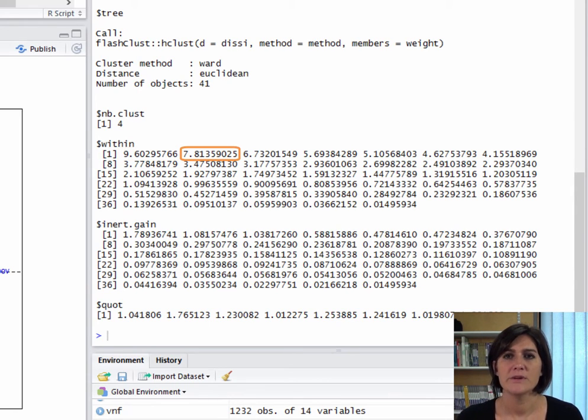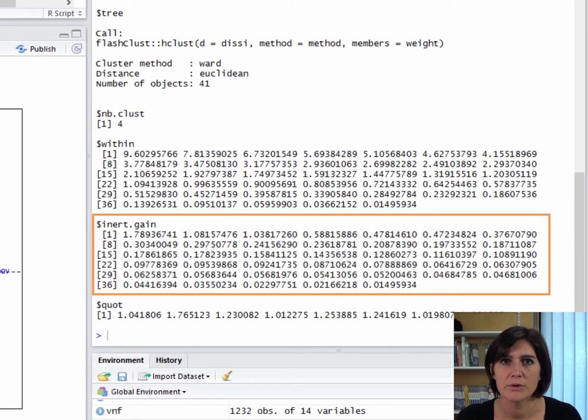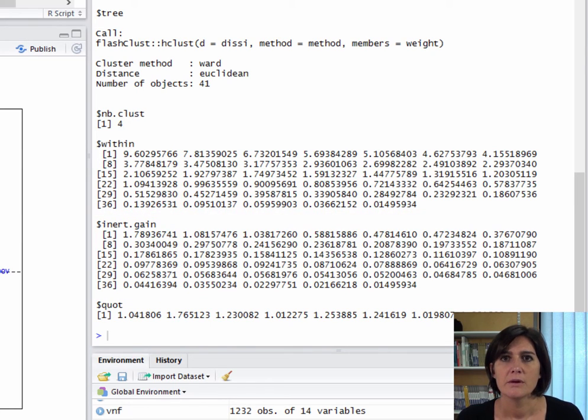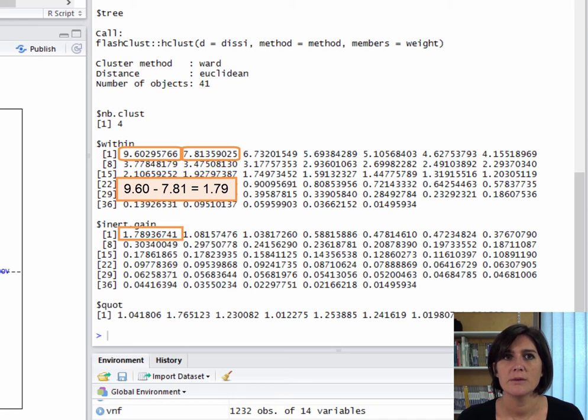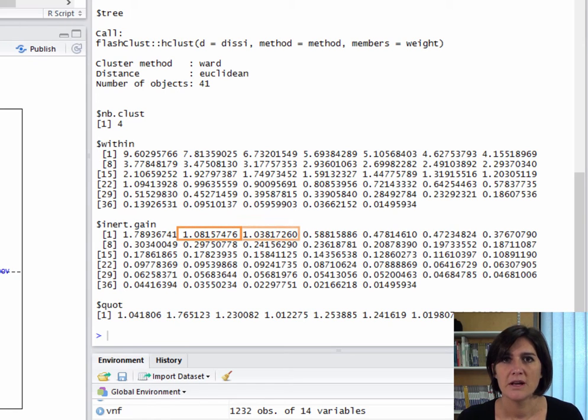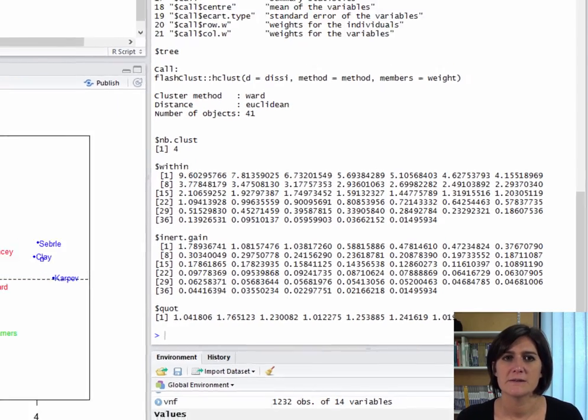Next up, we have the within class inertia when we partition the data into two classes, three classes, etc. Here, we have the gain in inertia when we go from n classes to n plus 1. So, when we go from one class to two, we have an increase in inertia of 1.78, which is a lot. So, we are going to want to keep at least two classes. Same thing, when we go from two to three classes, we gain a lot. Again, when we go from three to four, and then from then on, we don't gain so much. The output dollar cut gives us a ratio of successive within class inertias. This can help us choose an optimal number of classes.